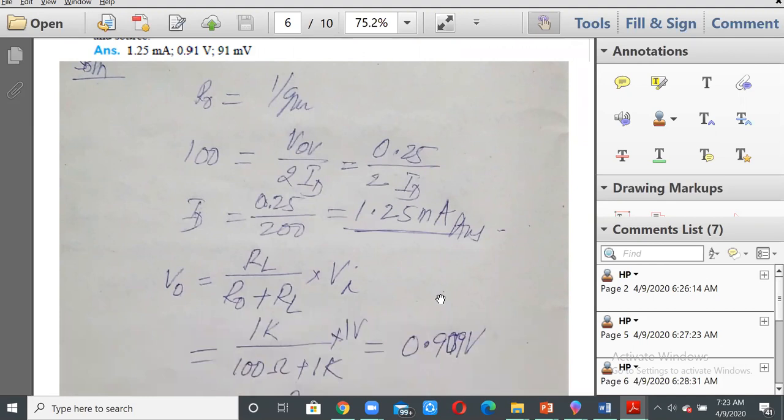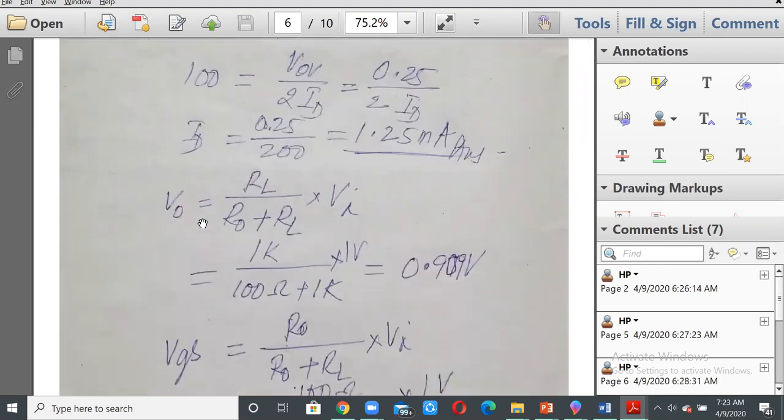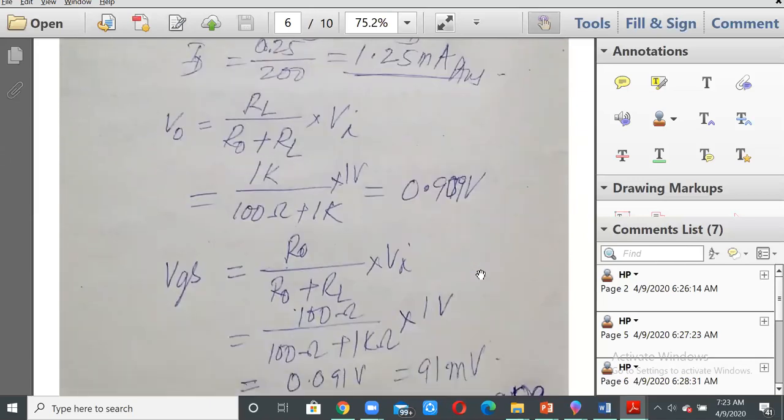Now V naught will be RL divided by R naught plus RL into Vi. So 1 kilohm divided by 100 ohms plus 1 kilohm, that will give you 1 by 1.1, that will be 0.909 or 0.91 approximately.